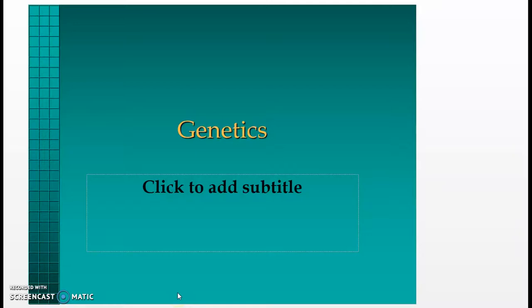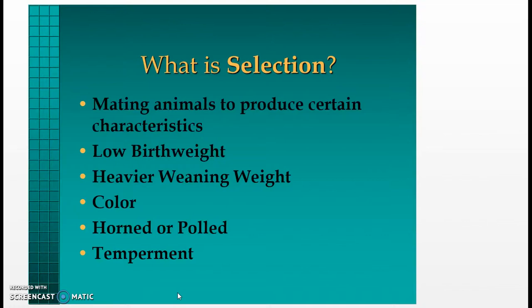Hello class, today we'll begin our study of animal genetics. First, what is selection? Selection is mating animals to produce certain characteristics. These characteristics can include lower birth weights, heavier weaning weights, specific colors, whether animals are horned or polled, and what an animal's temperament might be.